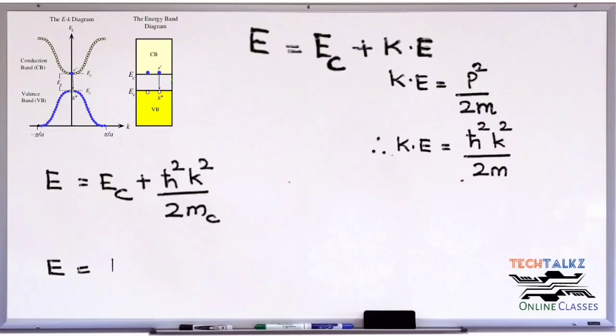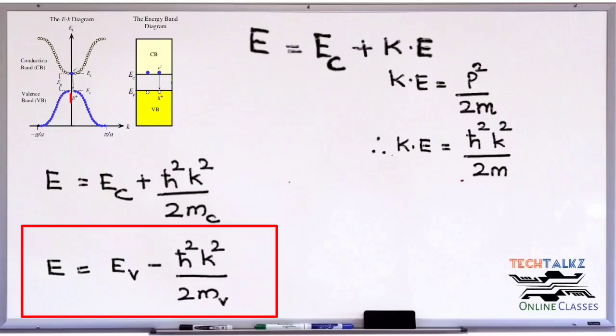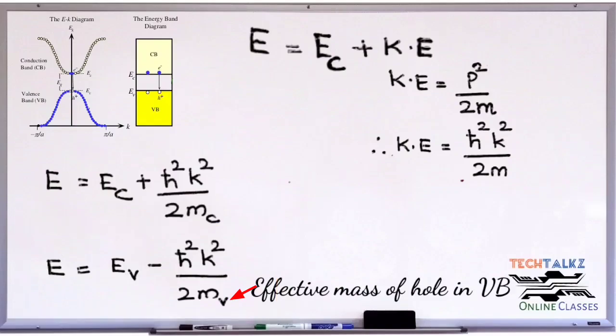For the valence band, energy E equals EV minus h cross squared multiplied with k squared divided by 2mv, where mv is the effective mass of holes in the valence band. Again, it's parabolic approximation because it varies as k squared. We will use this parabolic approximation in deriving the density of states.